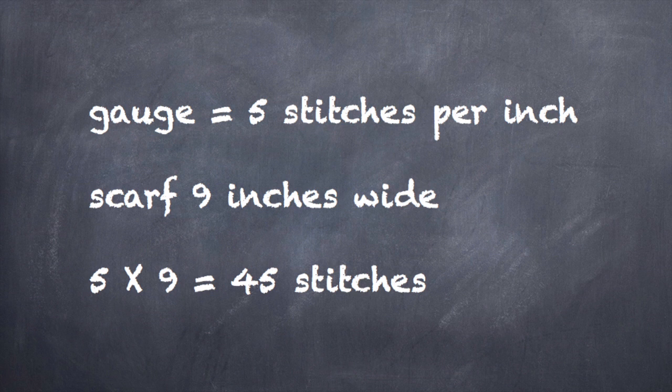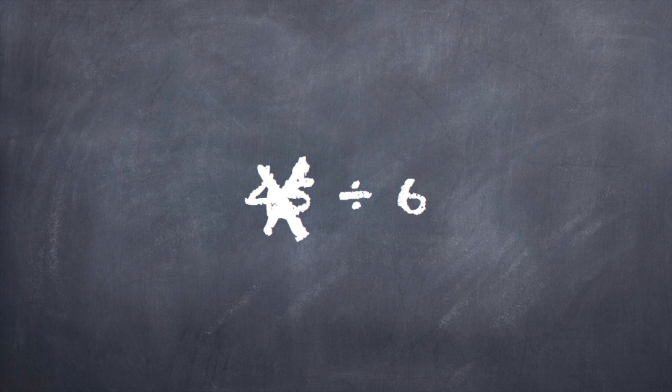But we want to use the pattern that we were just working with, which is a multiple of six. Now 45 is not divisible by six. So we need to add stitches or subtract them so that our pattern is divisible by six and comes out with a whole number.